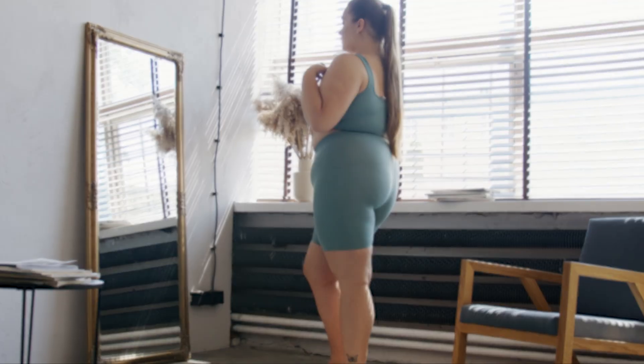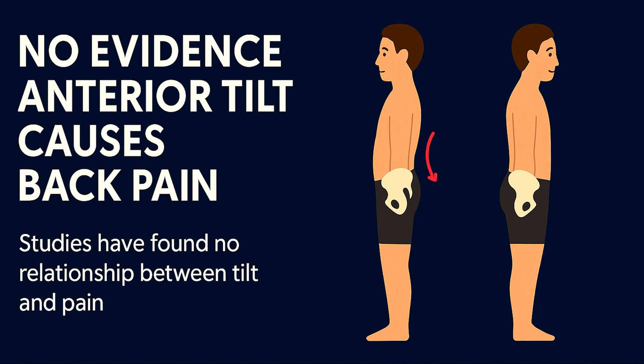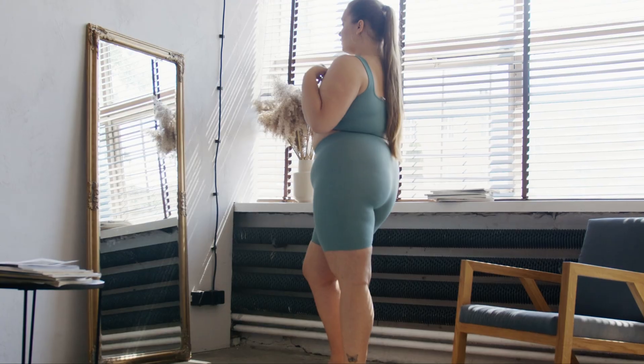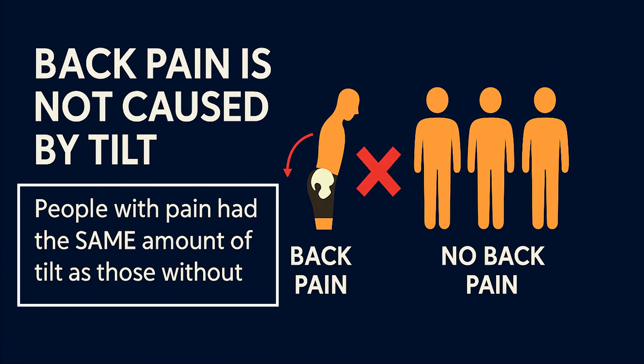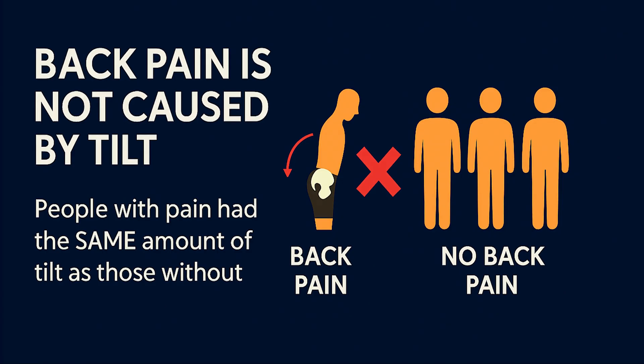A fair critique is that most people being a certain way doesn't mean it's good — if 85% of people were obese, that still doesn't make it healthy. But that brings us to number two: studies have not found a relationship between anterior tilt and back pain, meaning anterior tilt does not seem to cause any detriment to our health, unlike obesity. And number three, people with back pain have the same amount of anterior tilt as those who had no pain, meaning we cannot say the tilt was the cause of the pain — so it must have been something else.